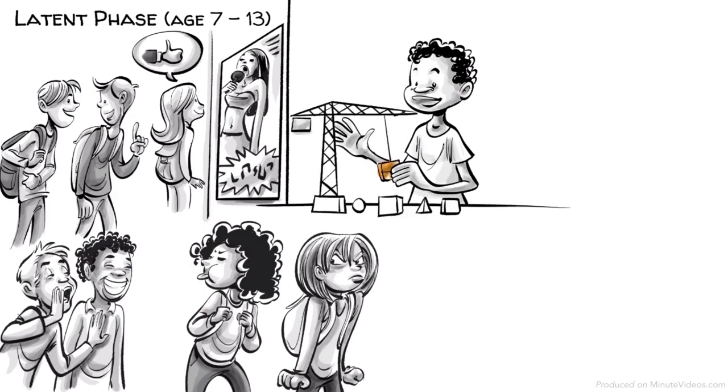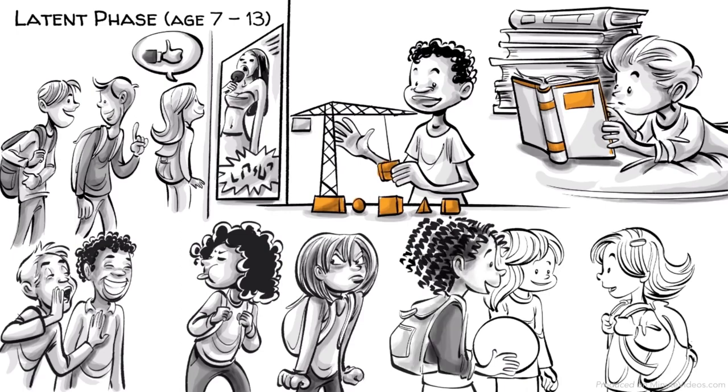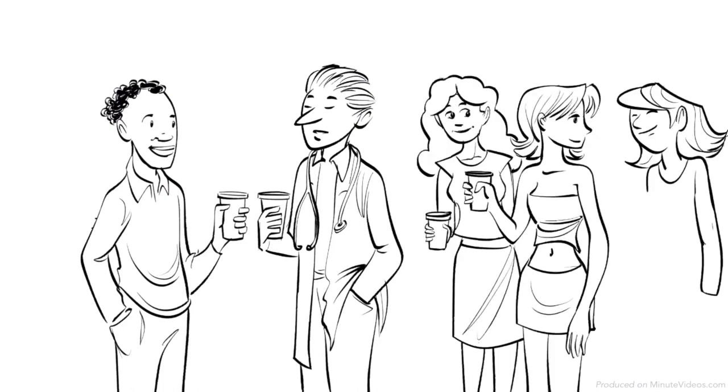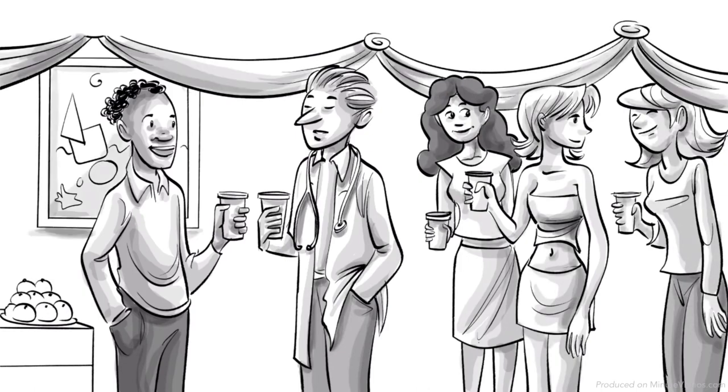Hans follows many hobbies. Ernst loves learning at school and Ida makes lots of new girlfriends. There is no real conflict in this phase. All three of them benefit for the rest of their lives from the skills they developed during latency.